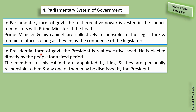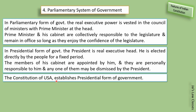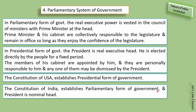In a presidential form of government, the president is the real executive head, elected directly by the people for a fixed period. Members of his cabinet are appointed by him, are personally responsible to him, and can be dismissed by him. The USA is a major example of presidential form of government. The Constitution of India establishes a parliamentary form of government where the president is only a nominal head.